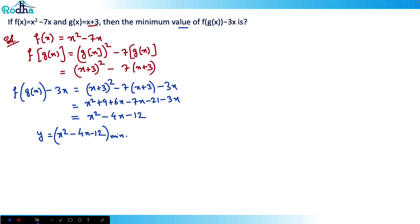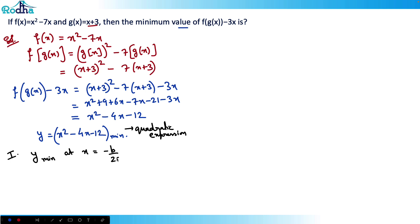There are a few methods to solve this, so we'll discuss all of them. Method 1: this is a quadratic expression, and any quadratic expression is minimum at x equals minus b by 2a. Comparing with ax² plus bx plus c, we get a equals 1, b equals minus 4, c equals minus 12. So x equals minus b by 2a equals minus of minus 4 divided by 2 into 1, which equals 4 by 2, that is x equals 2.